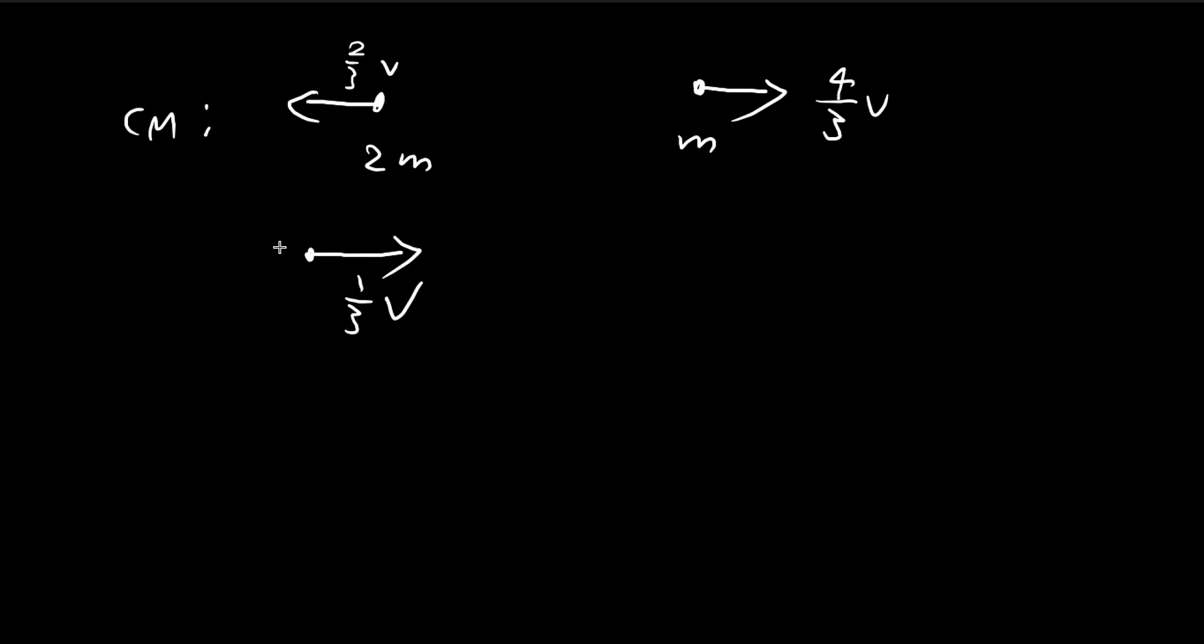So the CM frame is moving rightwards at v over 3. So using this, we can deduce their respective velocities in the lab frame. So if you find it difficult to always shift from frame to frame, one easy method I find to do this is to draw a diagram.